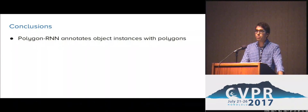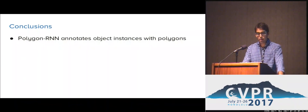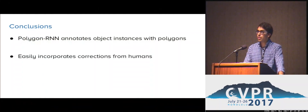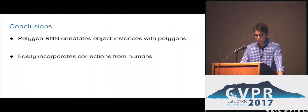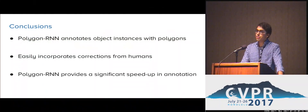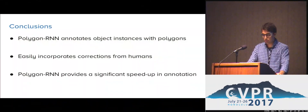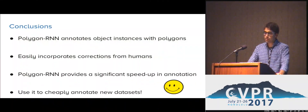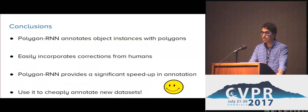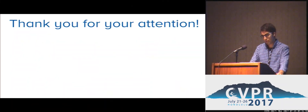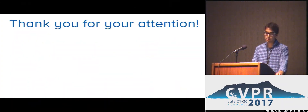In conclusion, Polygon RNN is an instance segmentation model that annotates object instances with polygons. It easily incorporates user corrections and, when used as an annotation tool, it provides a significant speed-up in annotation. Therefore, it's the perfect tool to annotate new datasets. Thank you for your attention, and we'll be happy to see you at Poster 22.